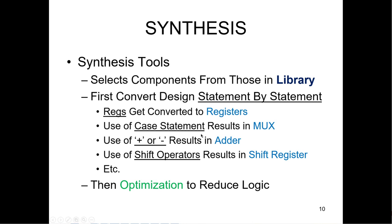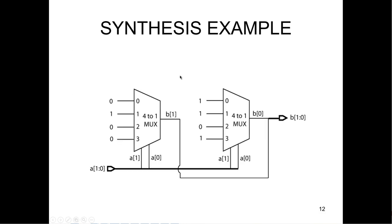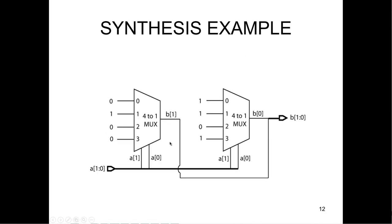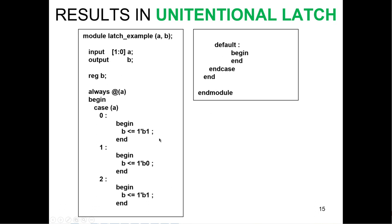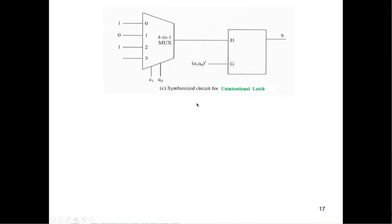Synthesis tools work by going statement by statement — they create registers for reg variables, case statements result in multiplexers, adding gives you an adder, shifting gives a shift register, and so on. One thing you have to remember is that you must specify all possible cases. If you don't, that creates problems. The unintentional latch happens when you have case values zero, one, two, but don't specify three — and even though you specified a default, you didn't specify a value for output B. Then you have to create a latch, usually a gated D latch.